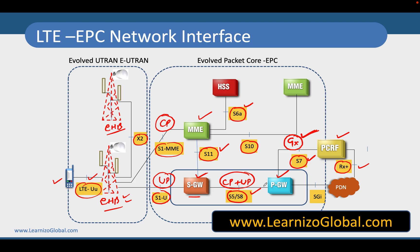Now, what is the difference between S5 and S8? S5 and S8 are both interfaces between the S-Gateway and P-Gateway. It will be named S5 if the S-Gateway and P-Gateway belong to the same network, and will be called S8 if they belong to different PLMNs. The distinction between same PLMN and different PLMN will be discussed later when we talk about the roaming architecture of the LTE EPC network. But this is a quick summary of all the interfaces, and in the upcoming videos we are going to talk about all these interfaces one by one and also the protocols running on them.